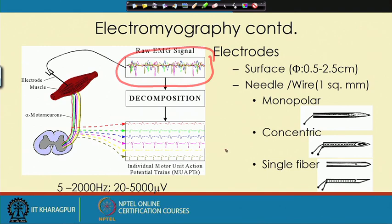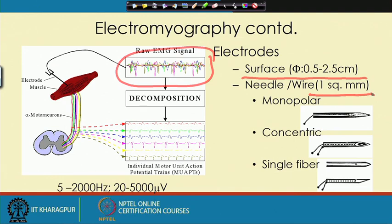Signals are collected first through surface electrodes, which typically have a diameter of 0.5 to 2.5 centimeters — up to about one inch in diameter — and these are patch electrodes. If we want to pinpoint and collect more specific information, we need to use needle or wire connections. The typical cross-section of such a needle is about 1 square millimeter. There are different kinds: monopolar, where the needle is connected to one wire, or concentric, where two connections exist — one from the sheath and one going through the inside — allowing very localized activity to be recorded.